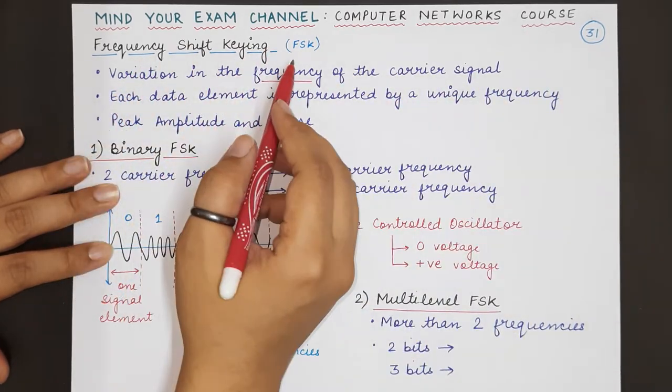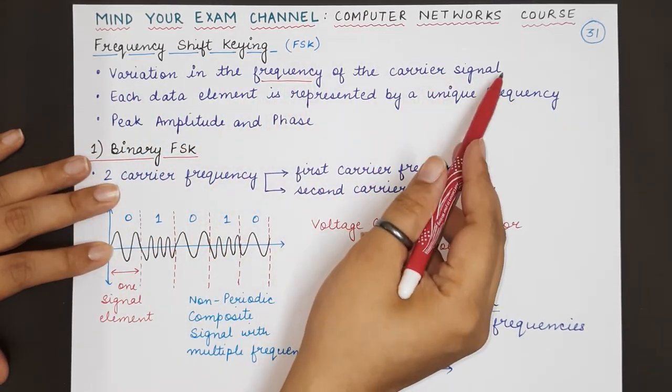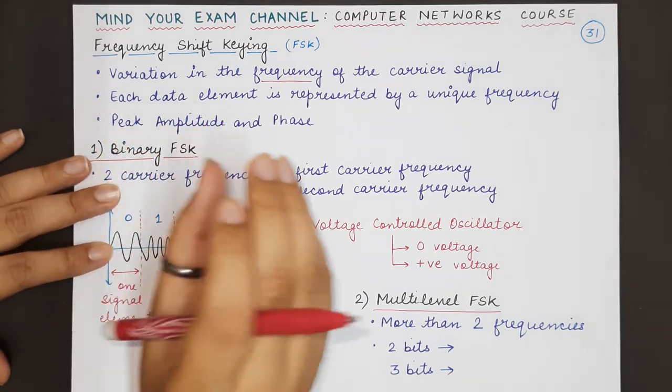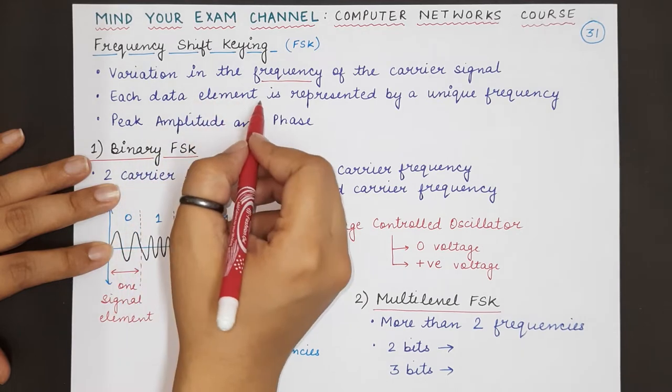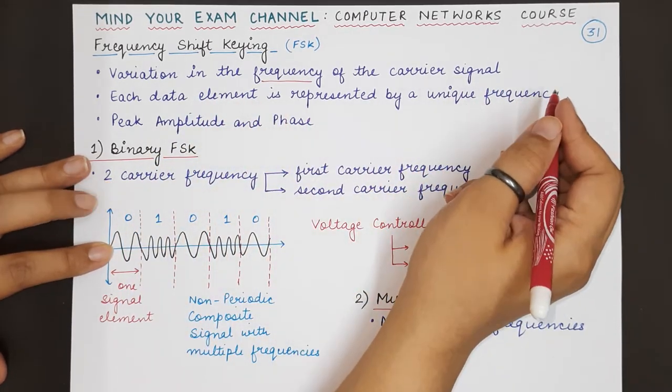In frequency shift keying, we are varying the frequency of the carrier signal depending upon the data element or the digital information that we want to transmit. Each data element will be represented by a unique frequency.